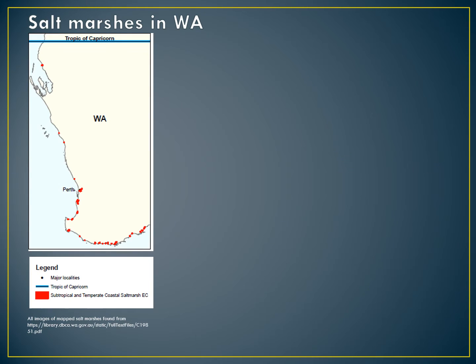Western Australia has the largest area of coastal salt marshes in the country. While there are salt marshes in the north half of Western Australia, the largest areas are in the south of the state. We will focus on these areas — those in the Swan Coastal Plain biogeographic region, which includes Perth and surrounding areas, occurring around the Swan, Peel-Harvey, Leschenault and Vasse-Wonnerup estuaries.